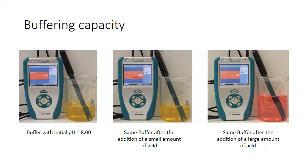A lot of acid has been added to the beaker at this point. Notice the change in volume in this final picture. Notice that the color has changed to red, which is what we expect for methyl orange in acidic solutions. Take a look at the actual pH reading on the Vernier LabQuest — it's 1.53, well below where it was originally. In this scenario, we've exceeded the capacity of this buffer.